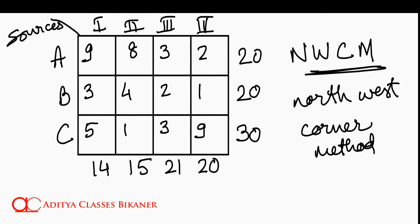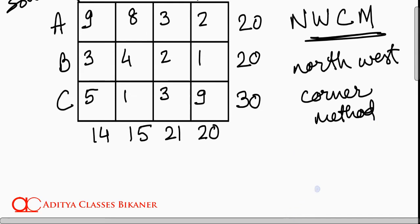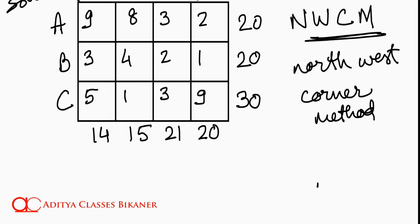Now as the name suggests, it has got something to do with directions, North and West. This gives me North West. This technique is about North West Corner. So where is my North West Corner of this transportation matrix that we have?